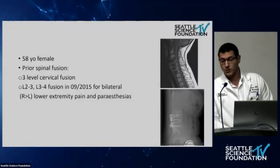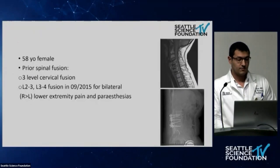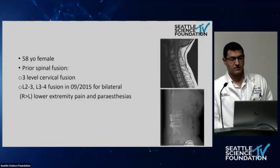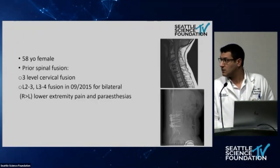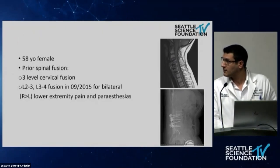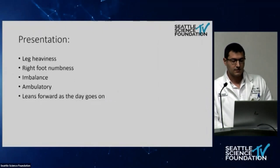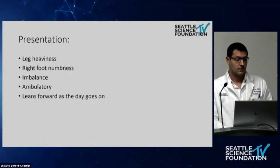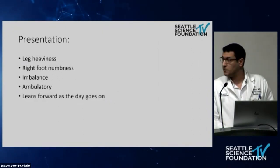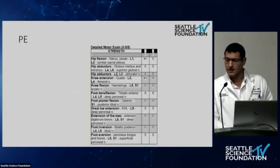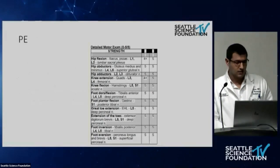The first case is a 58-year-old female. She had prior fusion — three levels of cervical fusion at C4-5, C5-6, C6-7 — and prior lumbar fusion at L2 to L4 for bilateral extremity pain and paresthesia. She presented to Swedish with leg heaviness, right foot numbness, imbalance, but was still ambulatory. She reported leaning forward as the day goes on. On physical exam, motor power was 5 over 5 throughout.